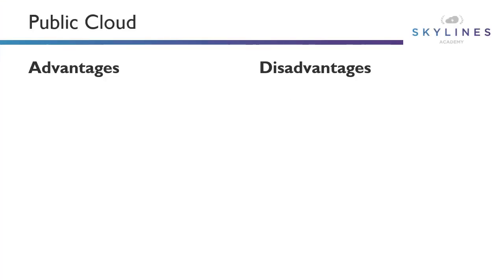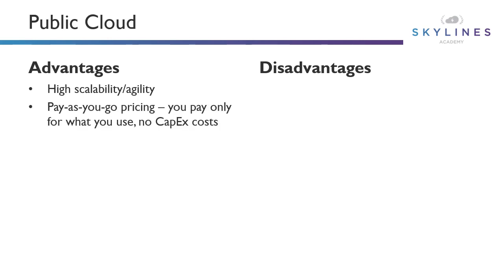Looking at the advantages of public cloud: we get high scalability and agility. We can scale workloads up and down, we can try features out, and everything is on demand — that's a big advantage. It's pay-as-you-go pricing; you only pay for what you use. As covered in the cloud economics section, there are no CapEx costs associated with public cloud. We are primarily in an OpEx model.